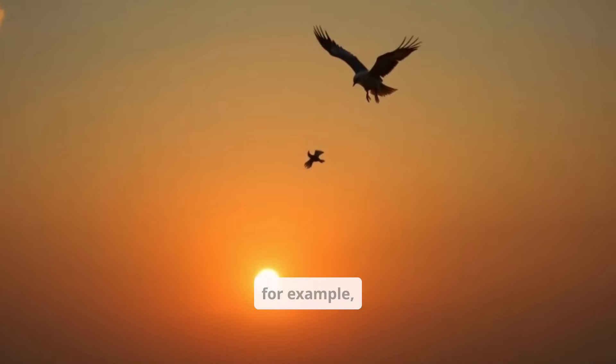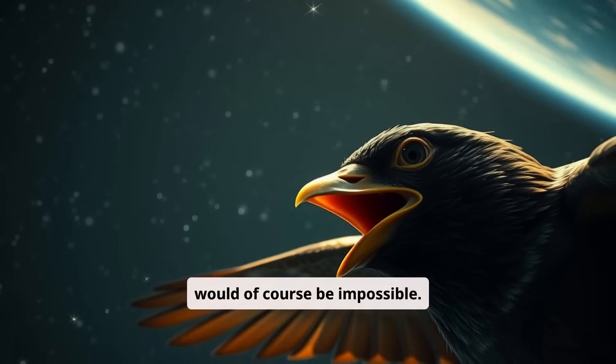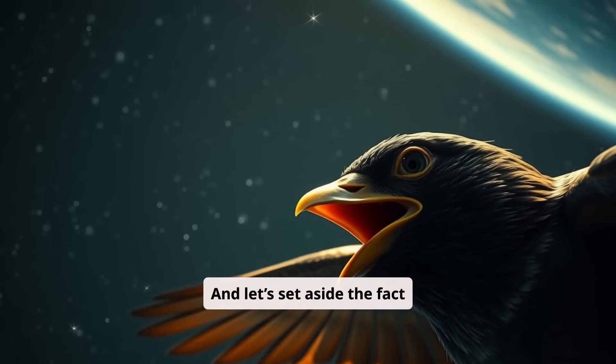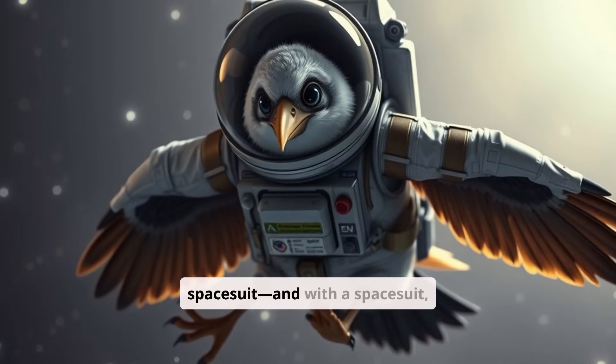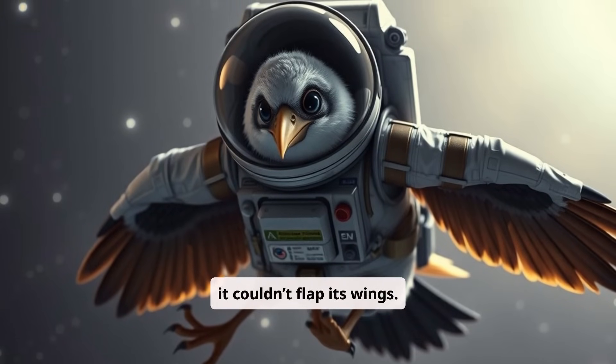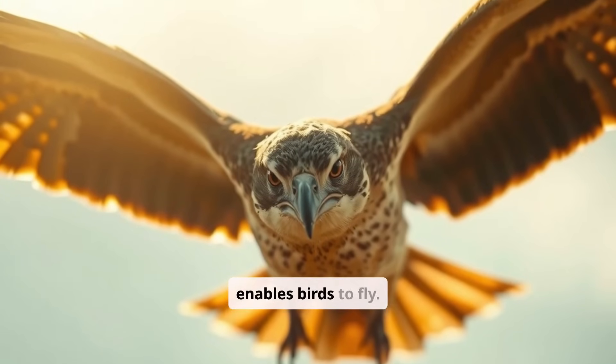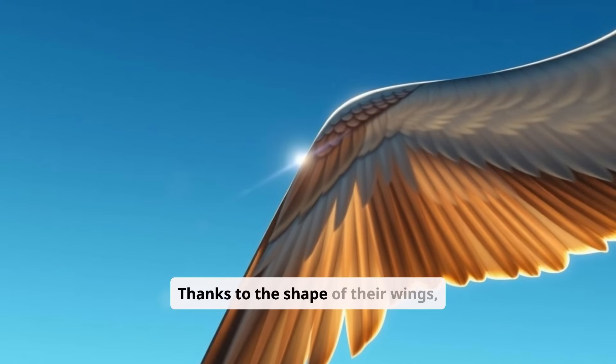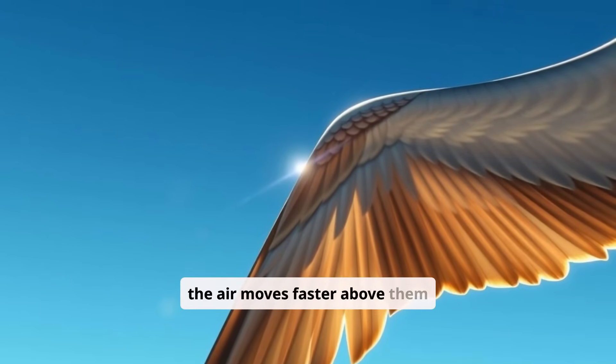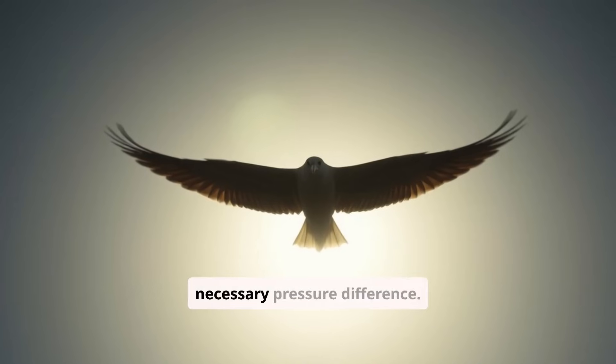Releasing a bird to fly to the Sun, for example, would of course be impossible. And let's set aside the fact that it would suffocate without a space suit, and with a space suit, it couldn't flap its wings. It's precisely air that enables birds to fly. Thanks to the shape of their wings, the air moves faster above them than below, creating the necessary pressure difference.